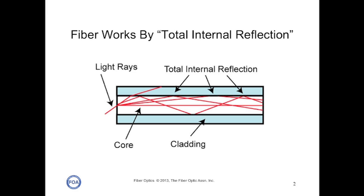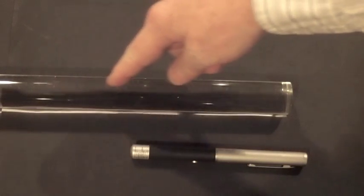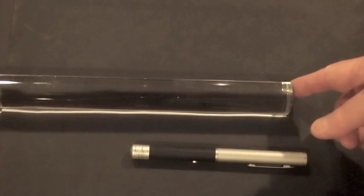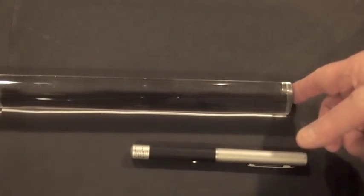So we can demonstrate this with our plastic rod. To show how light travels in the core of an optical fiber, we'll use our plastic rod to represent the core and the air surrounding it to represent the cladding. We've polished the ends so we can inject light into it easily.